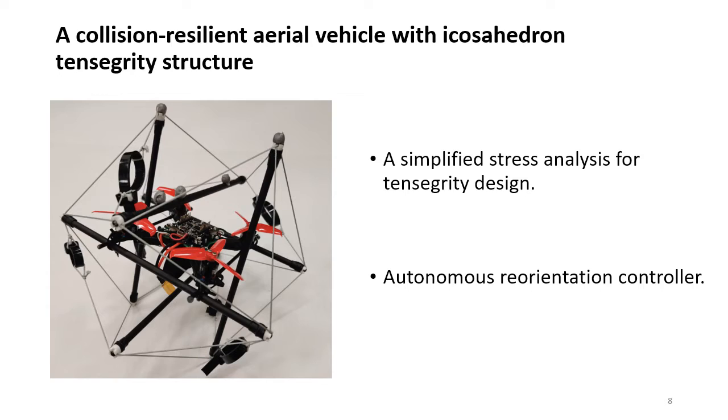Taking advantage of the unique features of tensegrity, we have designed a collision-resilient aerial vehicle with icosahedron tensegrity structure, as is shown here on the slide. In this presentation, we will focus on a simplified stress analysis for tensegrity structure that we used to guide our design. In the controller, we used to reorient the vehicle from an arbitrary orientation on the ground to help it take off.